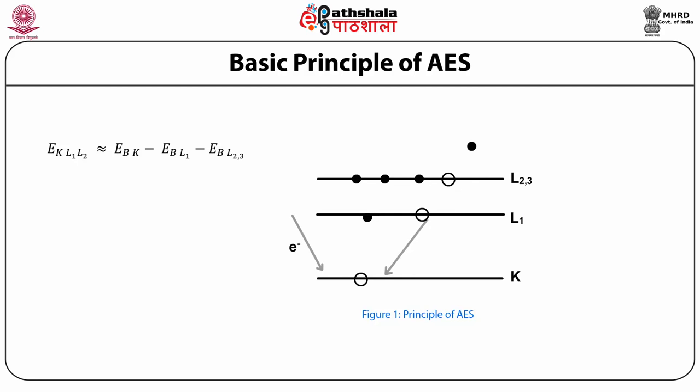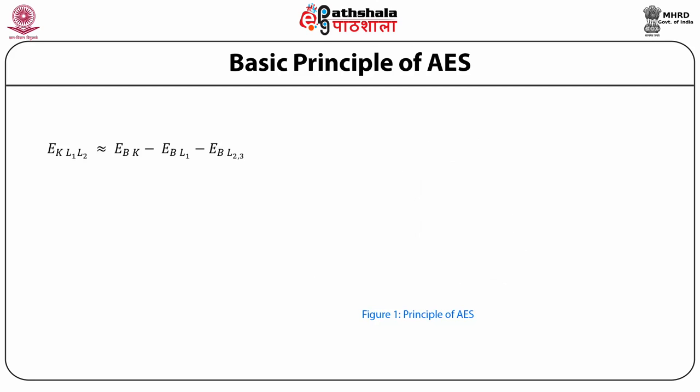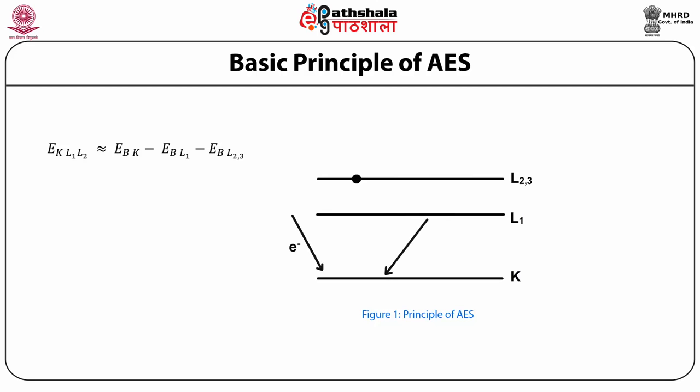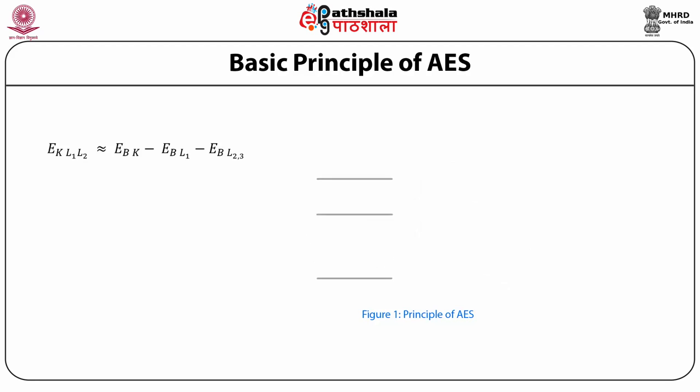The subscript of E_BX indicates the binding energy of electron shell X. For example, E_BK is the binding energy of the K-shell. Auger electron spectroscopy identifies the elements by measuring the kinetic energies of the Auger electrons. In the spectrum, an individual kinetic energy peak from an Auger electron is marked with an elemental symbol and subscripts indicating the electron shells or sub-shells involved.